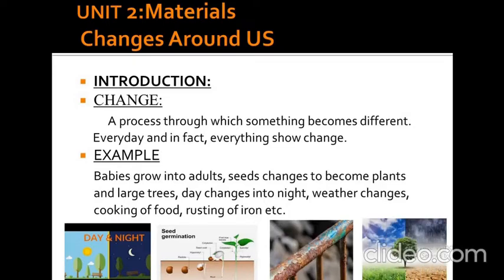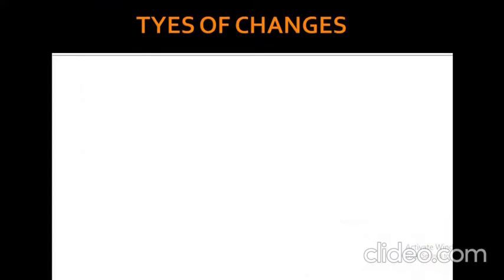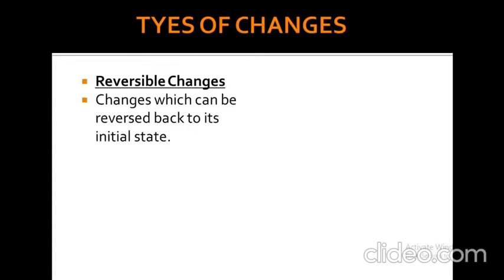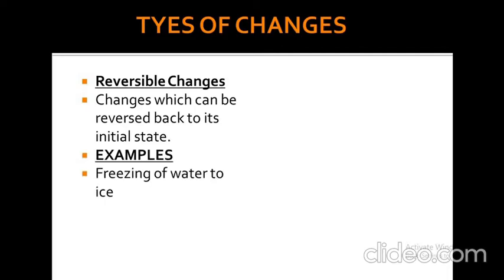If we see the types of changes, we have two main types: reversible and irreversible change. Now let's see what is reversible change. Reversible change is a change which can be reversed back to its initial state. For example, freezing of water to ice and melting of chocolate. These are reversible changes.